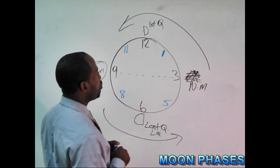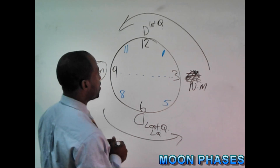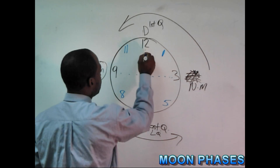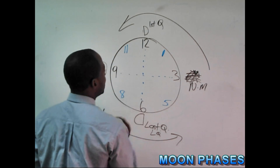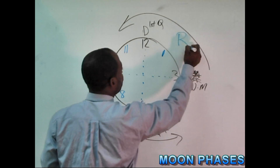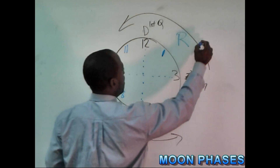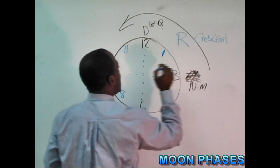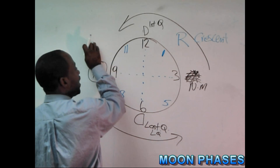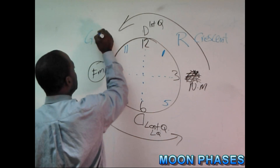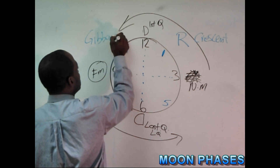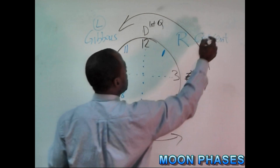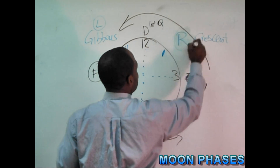The only other tricky part is this: we're going to split the clock into a left and a right side. On the right side, think crescent. On the left side, think gibbous.